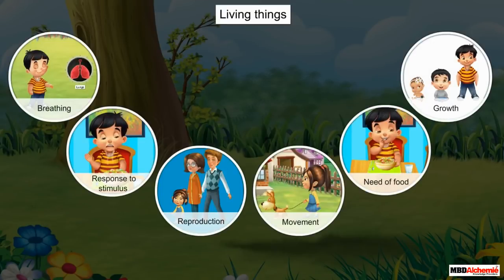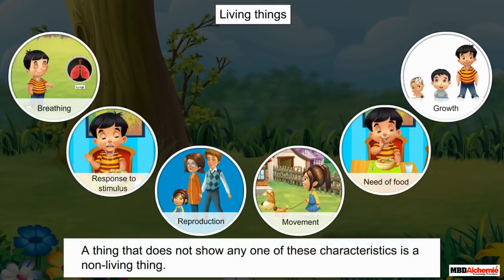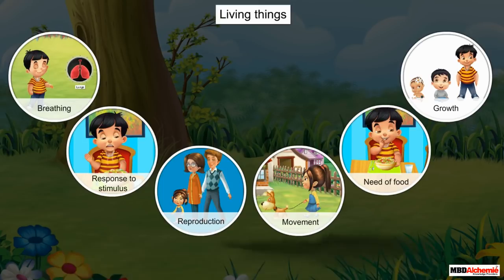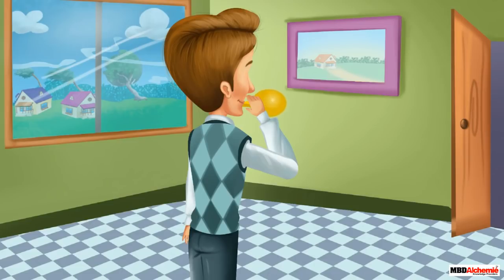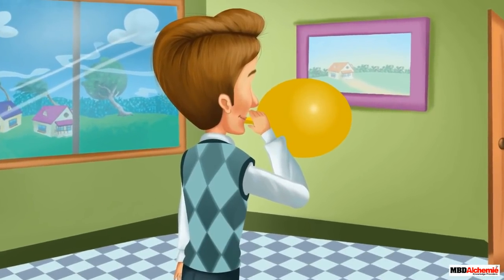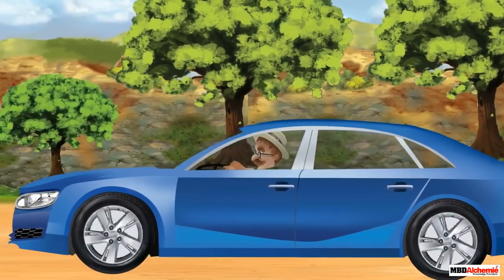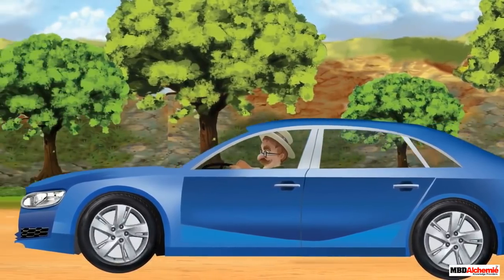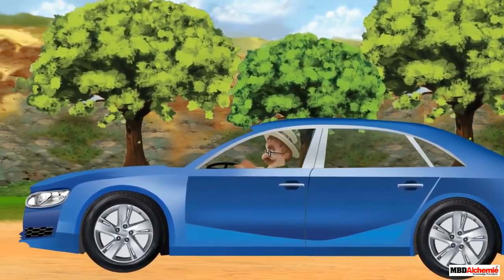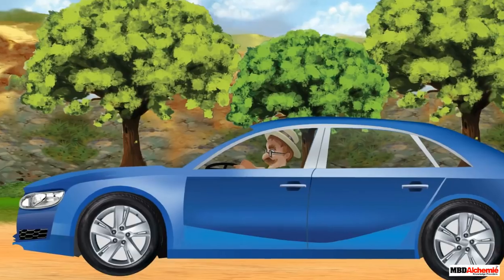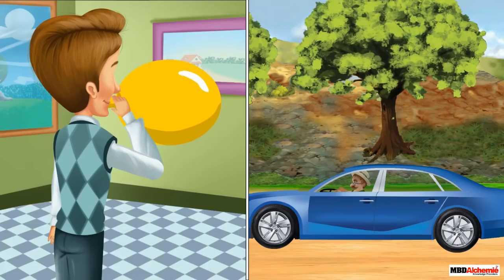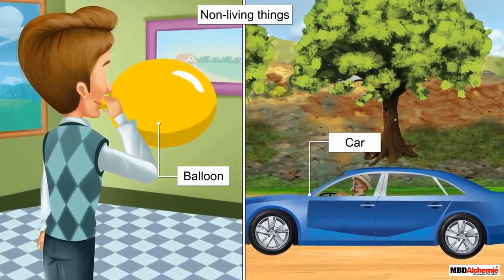A thing is living only if it shows all the characteristics we have just discussed. If it does not show any one of these characteristics, it is a non-living thing. You may have often seen a balloon increase in size. That does not mean the balloon is a living thing — its size increases only when we blow air into it; it cannot grow on its own. Similarly, even though a car moves from one place to another, it is a non-living thing. A car does not eat food and grow, and it does not move on its own — it moves when we drive it. Hence, both balloon and car are non-living things.